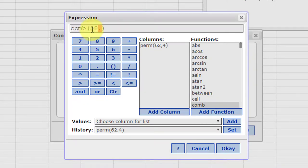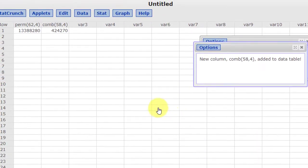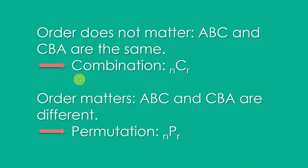And we need to enter our n this time, it's 58, because we had four people elected officers, but we're still electing four, so I'm going to click OK, Compute, and you can see that we have only, it's still a lot, 424,270 ways that we can select four people out of those 58 members.